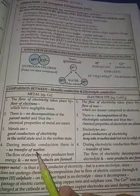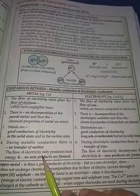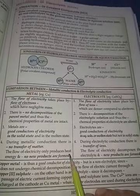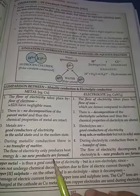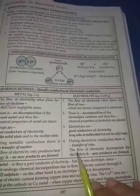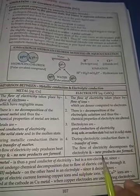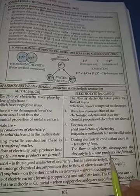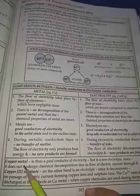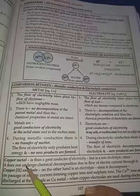During metallic conduction there is no transfer of matter — it remains in place. The flow of electricity only produces heat energy and no new products are formed. In electrolytic conduction, the flow of electricity decomposes the electrolyte and new products are formed.